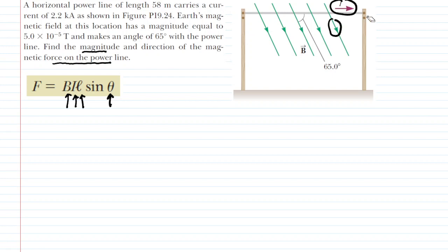If we look at the diagram, we can actually see that the angle between the current and the direction of the magnetic field is this angle right here, so our angle is 65 degrees.